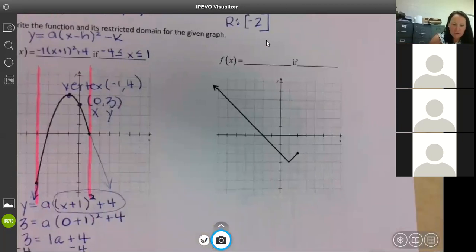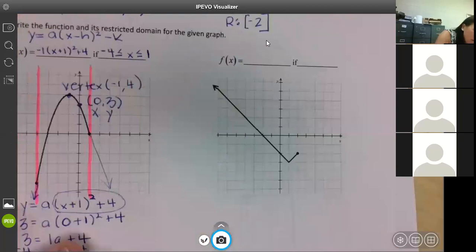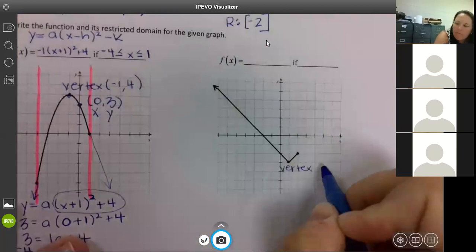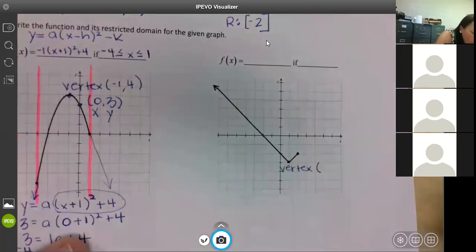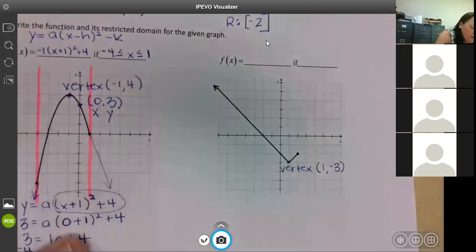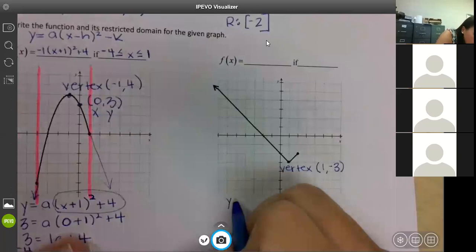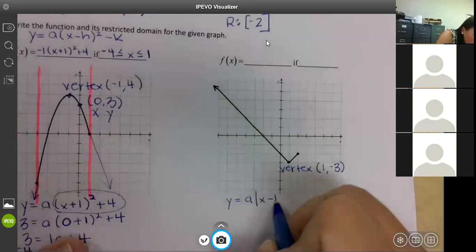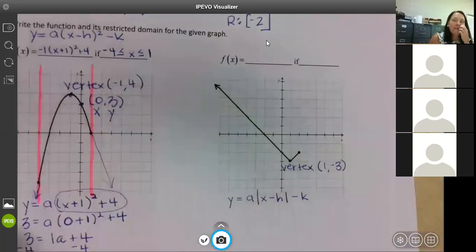Alright. What kind of function is this? Absolute value. Where is your vertex? One negative three. One negative three. Okay. One negative three. So we have y equals a absolute value of x minus h minus k. The same exact thing that we just did. It's just absolute value instead of the squared quadratic.